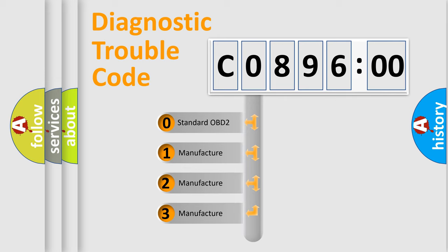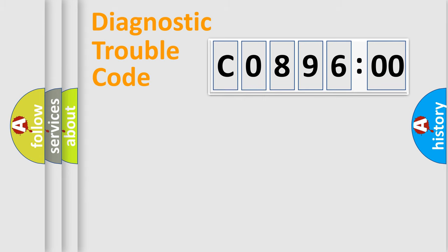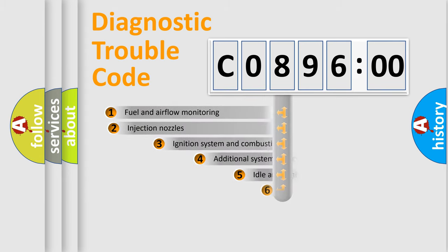If the second character is expressed as zero, it is a standardized error. In the case of numbers 1, 2, 3, it is a more prestigious expression of the car-specific error.